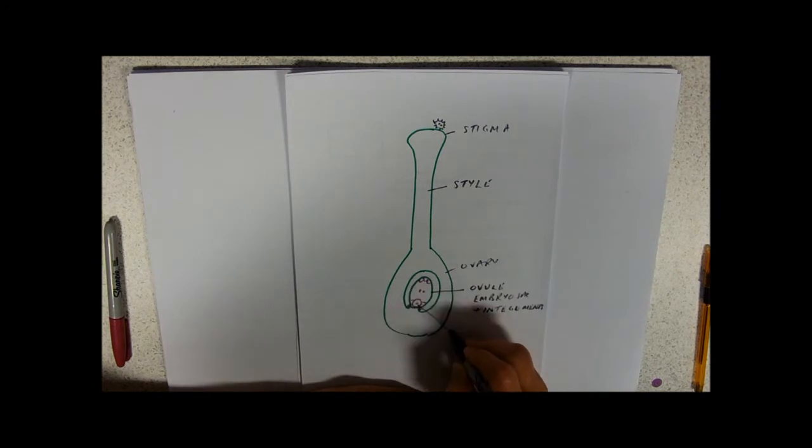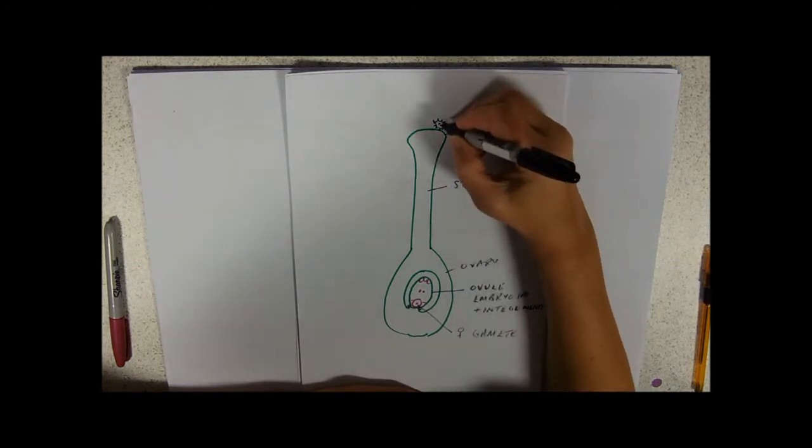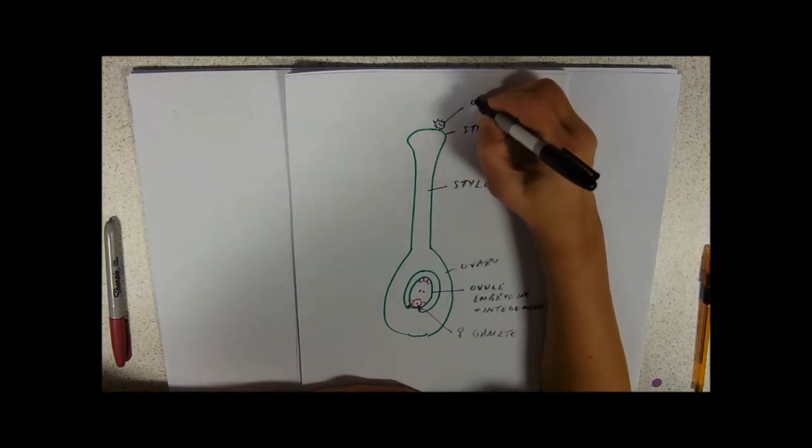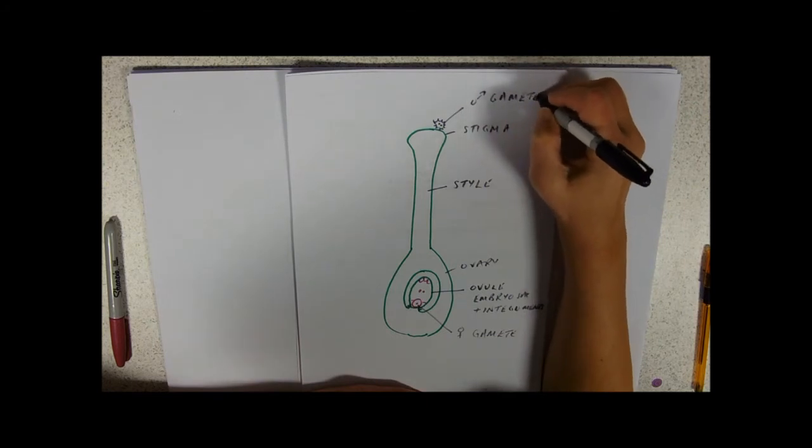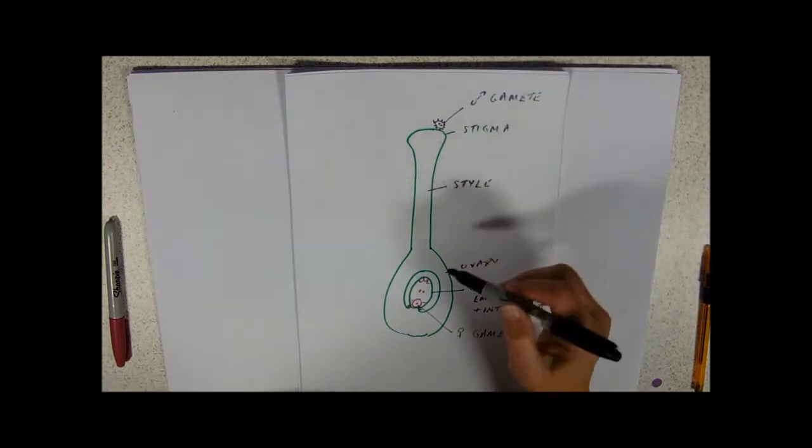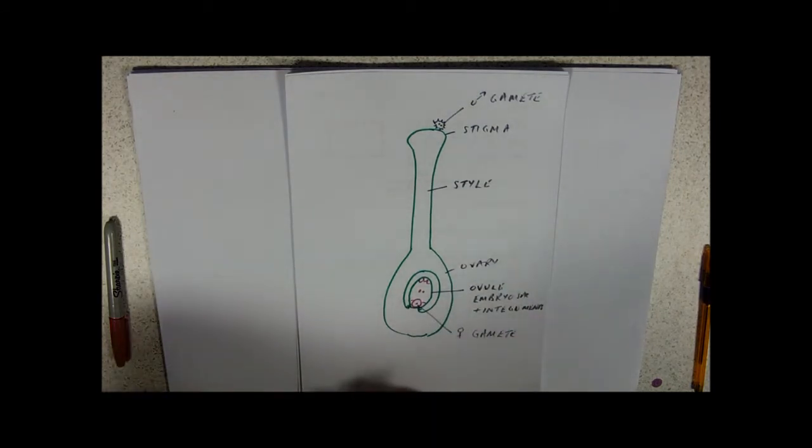Down here we've got the female gamete and our male gamete has got to get quite a long way from the stigma down through the style in order to be able to do fertilization.